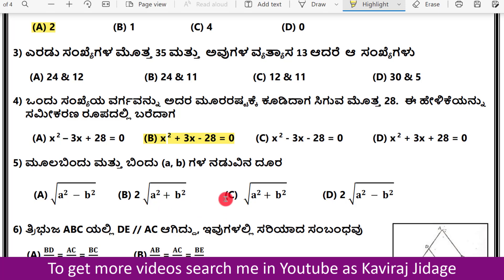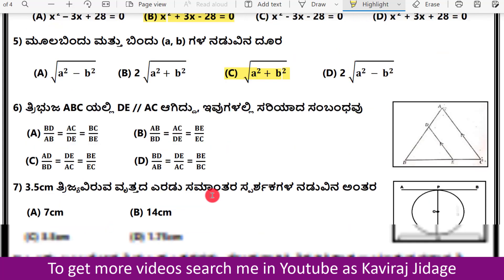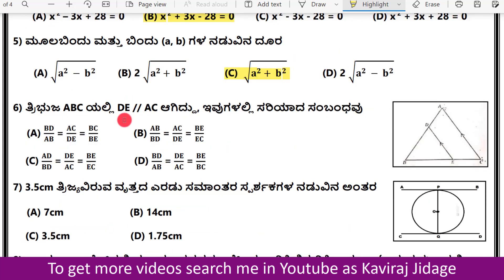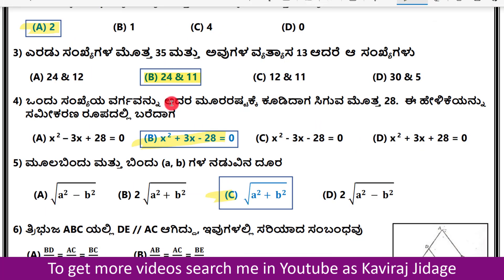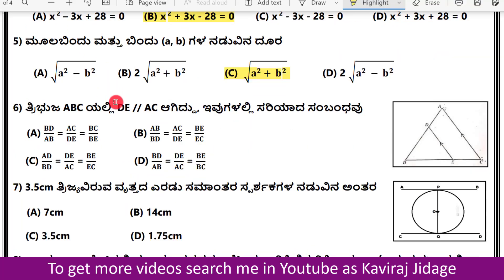The answer is A squared plus B squared. For the next question, the answer options are A, B, C, D — the correct answer is C. This question's correct answer is D, and the correct answer for the next question is also noted.